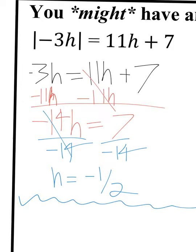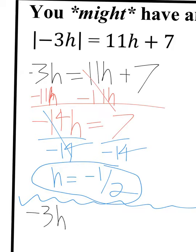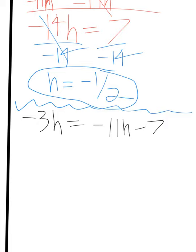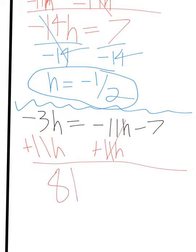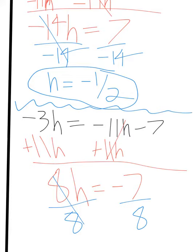Now I have to flip the signs on one side of the equation. I like to work with the right-hand side, so rather than saying 11H, I'll say negative 11H, and rather than saying plus 7, I'll say minus 7. So I flip the signs and solve again. I'll plus 11H over under the negative 3H, and I'm going to get 8H equals negative 7. So when I divide, I get H equals negative 7 over 8.